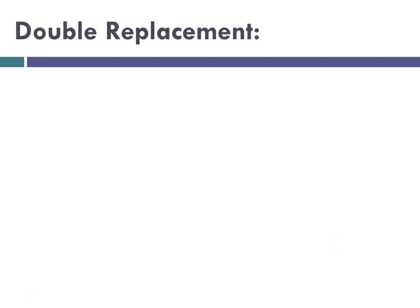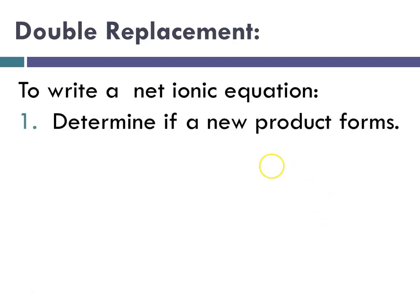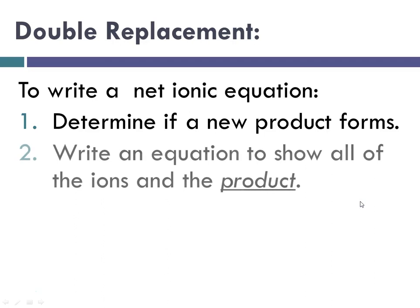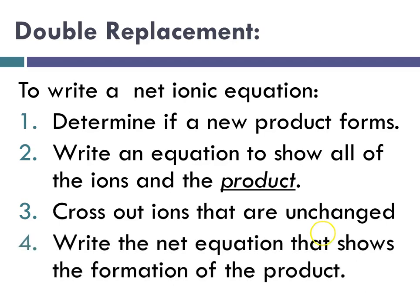So to summarize, in a double replacement reaction where you are writing a net ionic equation: you will first determine if a new product forms — so again, you're looking for the formation of a precipitate, or a gas, or a molecular substance. You're going to write an equation to show all of the ions and the product — and I wrote it as product here because it may be a precipitate, it may be a gas, or it may be a molecular substance. Then you're going to cross out the ions that remain unchanged. And finally write the net equation that shows the formation of your product.